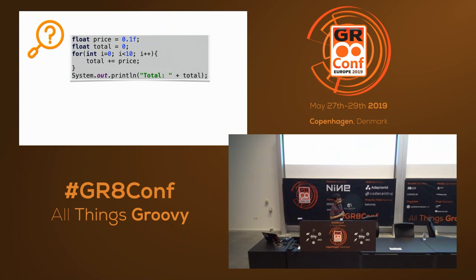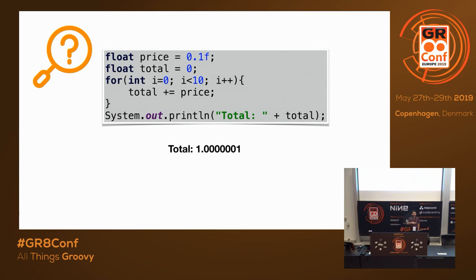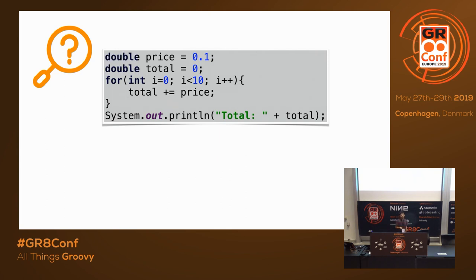This is a Java code example. I have a product worth 0.1, then I buy 10 such items. If you're running a business or a customer buying something, you wouldn't be happy with the float result. Now let's use double instead of float and see what the result would be — the business owner won't be happy with that result either.